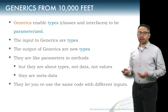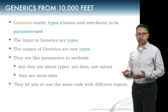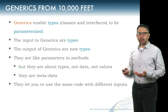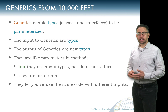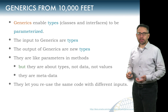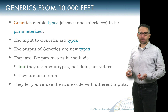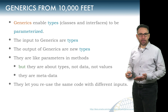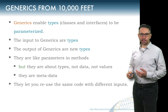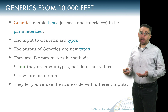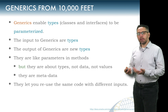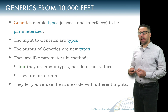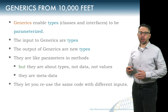Talking about generics from 10,000 feet — from a very high level — what are we talking about? Generics is a term of art used in Java to describe the way in which types themselves can be parameterized. What kind of types? Well, classes and interfaces, and actually methods as well. What you need to know is the input to generics are types, and the output of generics are new types.